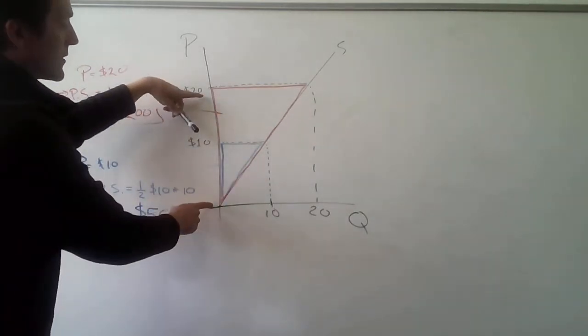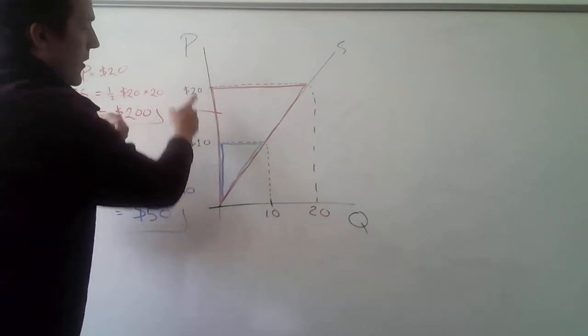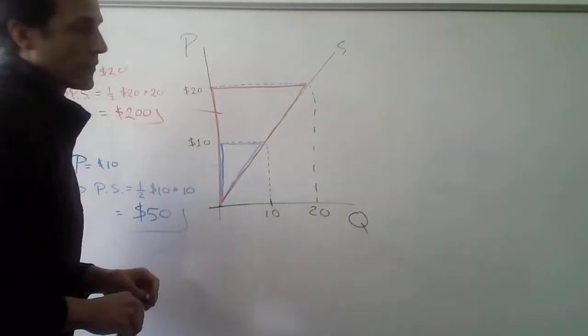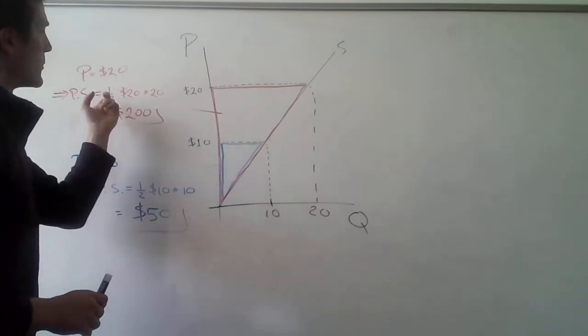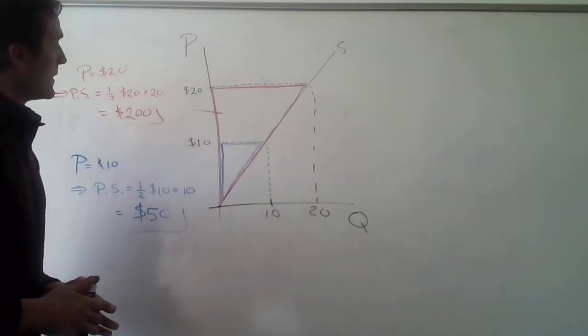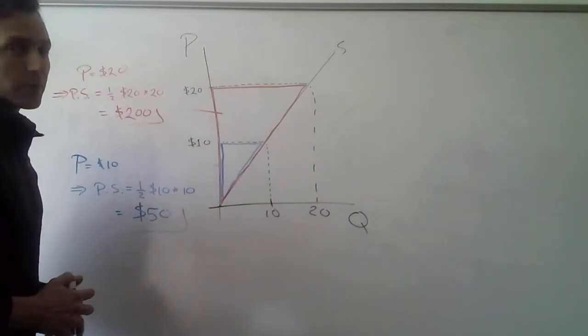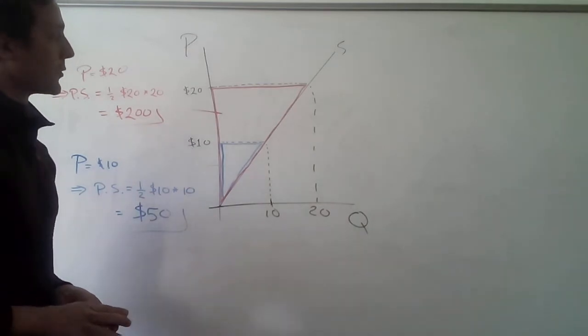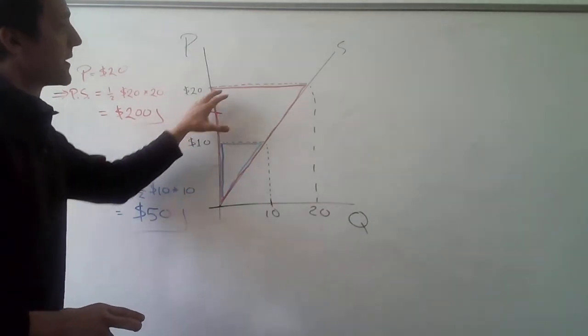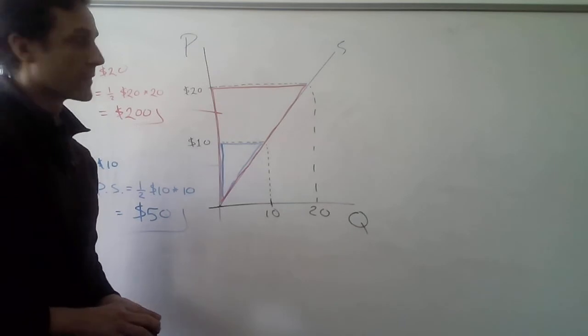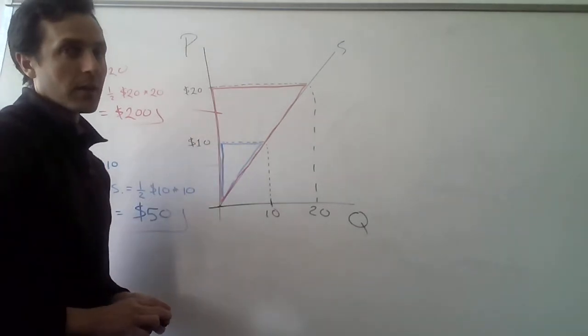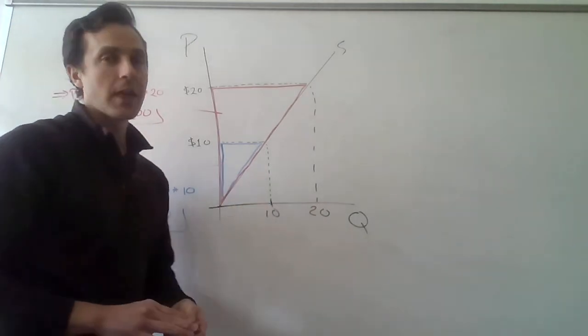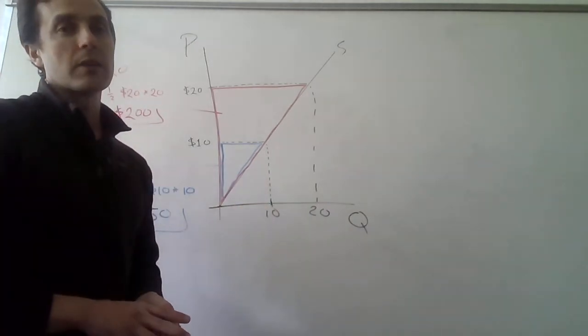well, the dimensions of the triangle are $20, horizontally, and then vertically, 20 units. So the area of that triangle is one half $20 times 20, which comes out to $200, right? So we see that the producer surplus grows to $200 when the price is $20, which is going to induce them to supply 20 units at that price.